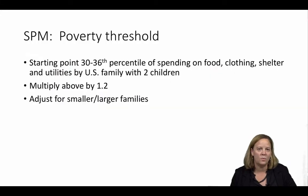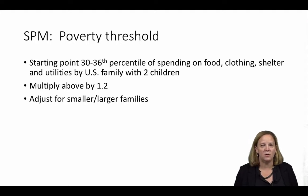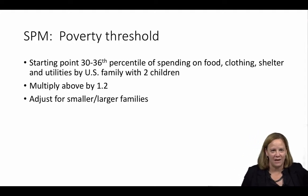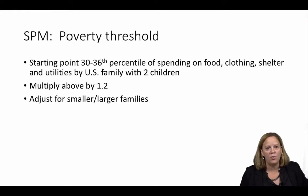Next, we need to consider the threshold part of the SPM. The poverty threshold or poverty line for the SPM differs from that for the Official Poverty Measure. The SPM threshold is based on the 30th to 36th percentiles of expenditures by U.S. families with two children on food, clothing, shelter, and utilities. This number is then multiplied by 1.2.